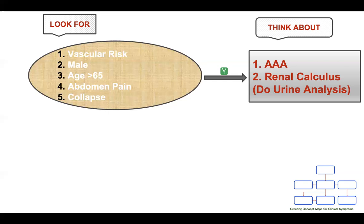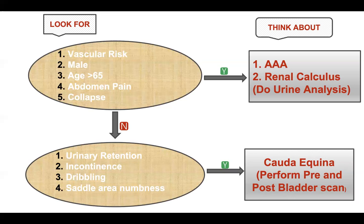If the answer to those questions is no, then check if the patient has urinary retention, incontinence of urine, dribbling of urine, or any saddle area numbness. If the answer is yes, then you should think about cauda equina. We are not just asking questions from a template but using open or closed questions to find out if the patient has saddle anaesthesia, urinary retention, or incontinence to exclude or confirm cauda equina. If so, check pre- and post-void bladder scan and perform a digital rectal examination to check sphincter tone and saddle area sensations.